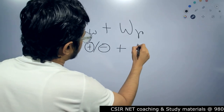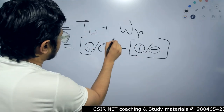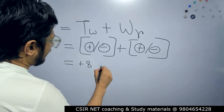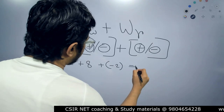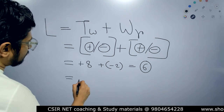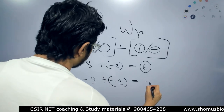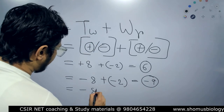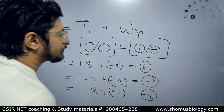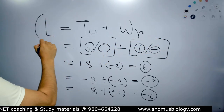For example, if the twist number is plus 8 and the writhe is minus 2, then the total linking number would be plus 6. If the twist is minus 8 and the writhe is minus 2, it will be minus 10. If the twist is minus 8 and the writhe is plus 2, then it is minus 6. In this way, we have different values of our linking number.